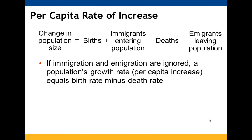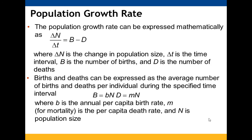To look at changes in population size over time, we account for births and immigration and subtract deaths and emigration. If we ignore immigration and emigration, population growth rate is simply birth rate minus death rate. To determine the values of B (births) and D (deaths), we don't count every individual; instead we determine the average number of births and deaths per individual and multiply by population size N.